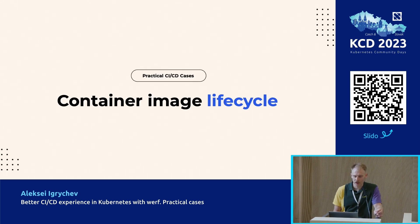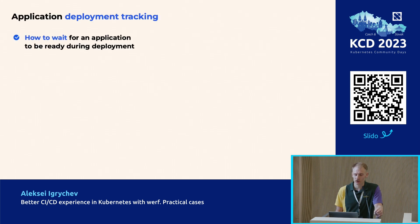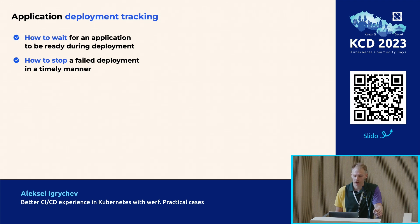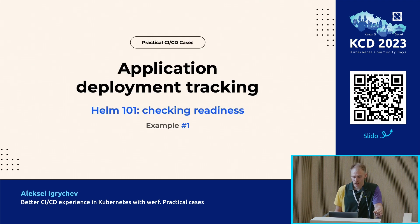With this I end the part about the container image life cycle — it was a small overview of the main Werf approaches. The next part is about application deployment tracking. I will touch on such topics as how to wait for an application to be ready during deployment, how to stop a failed deployment in a timely manner, and how to make the deployment process transparent and verbose.